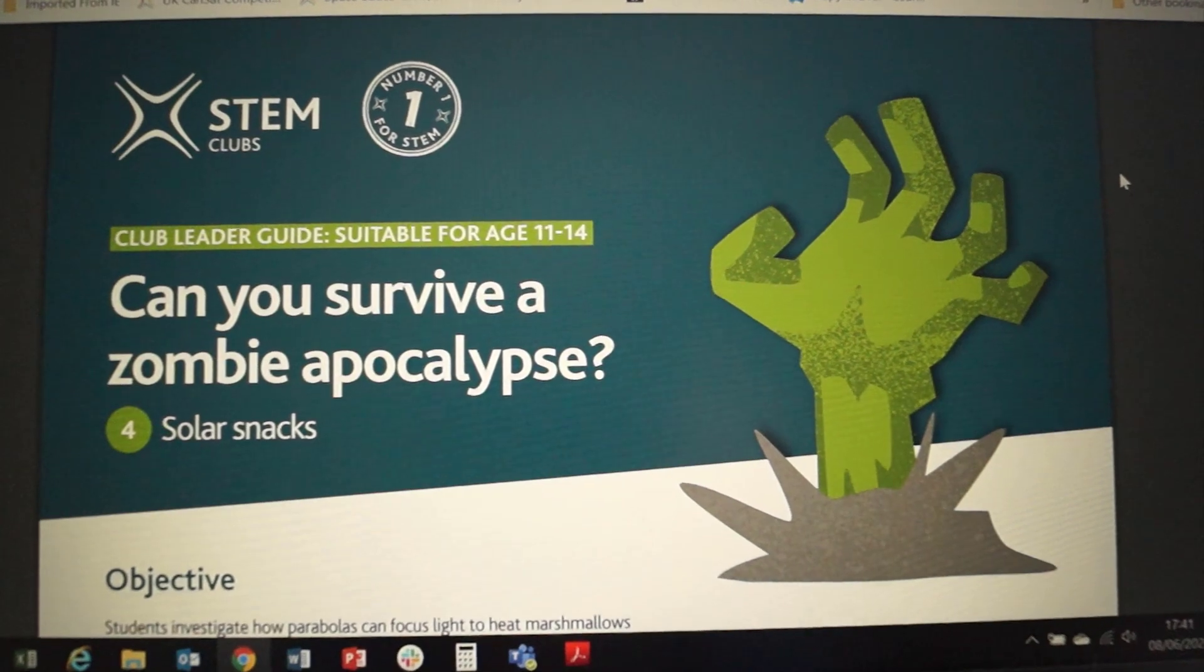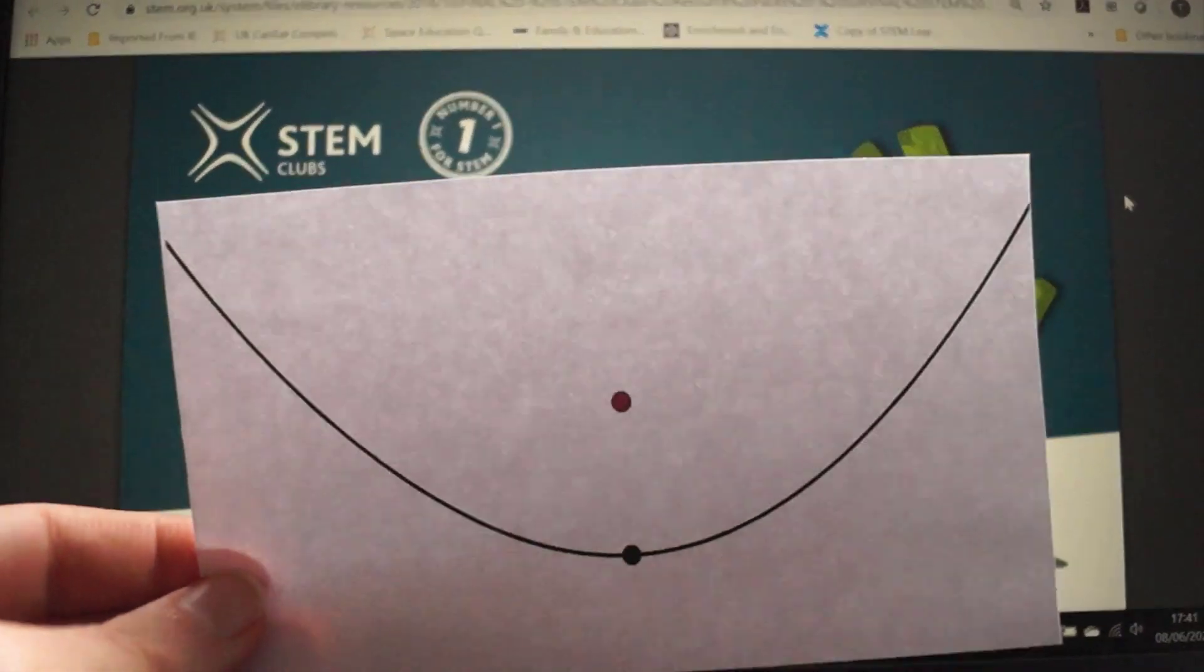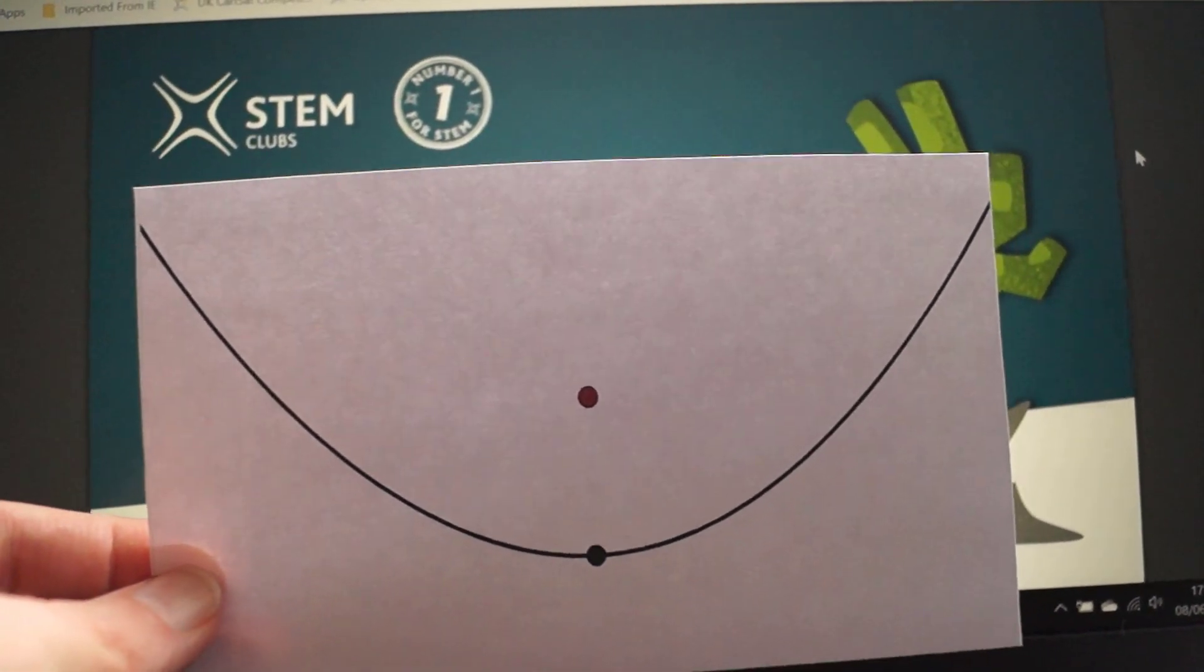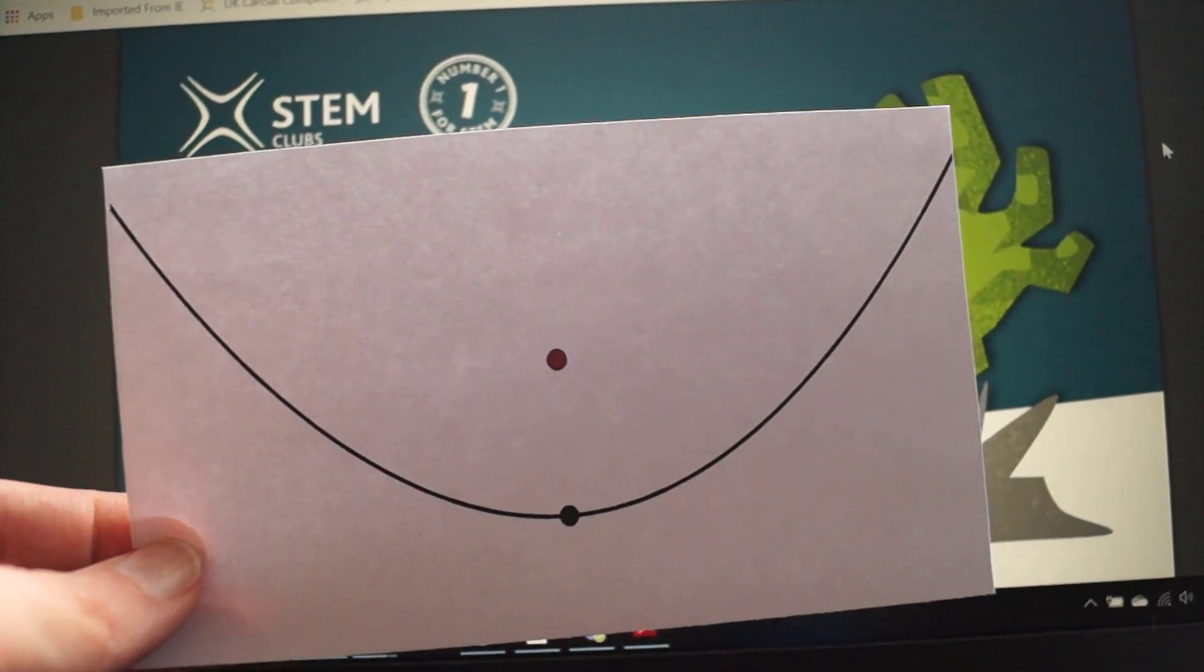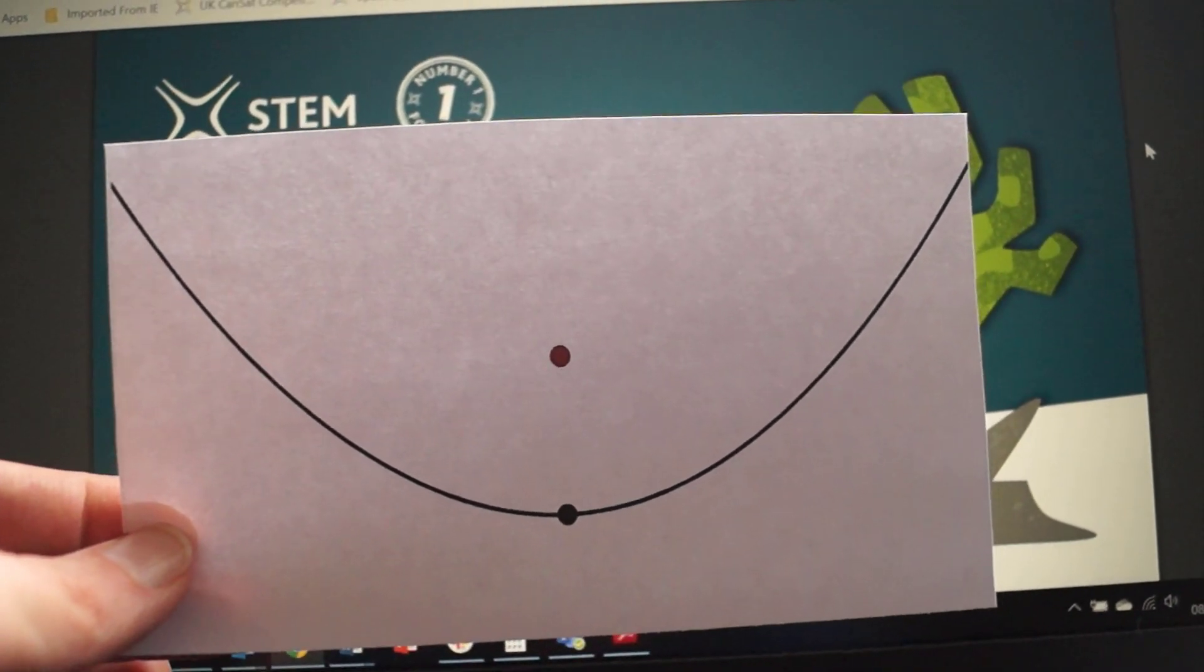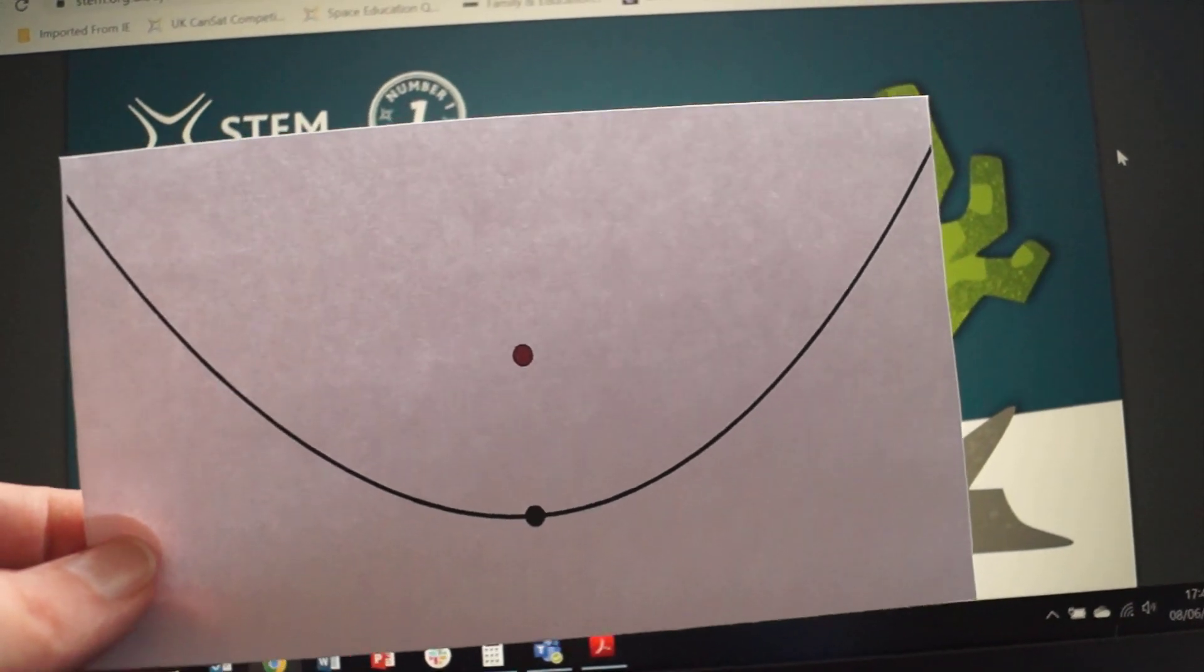Within the resource, there is a template for a parabola. There it is. I've cut it out of the resource. A parabola basically is a shape which has a focus, which you can see on there on the red dot. So that if we add in something reflective into that parabola shape,